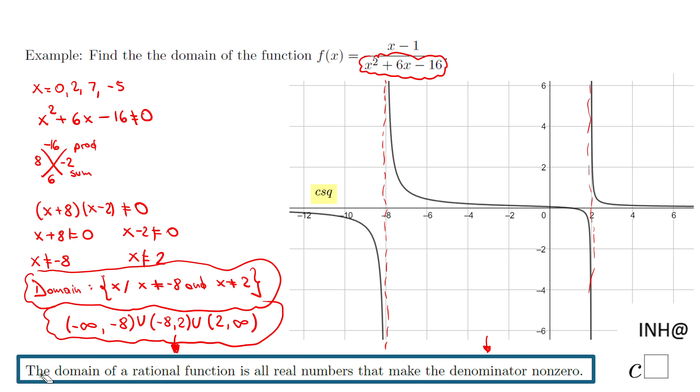The function does not exist at these points. We have asymptotes, or holes as they're called. And yes, this shows the domain - all numbers from negative infinity to -8, then between -8 and 2, and then from 2 to infinity.